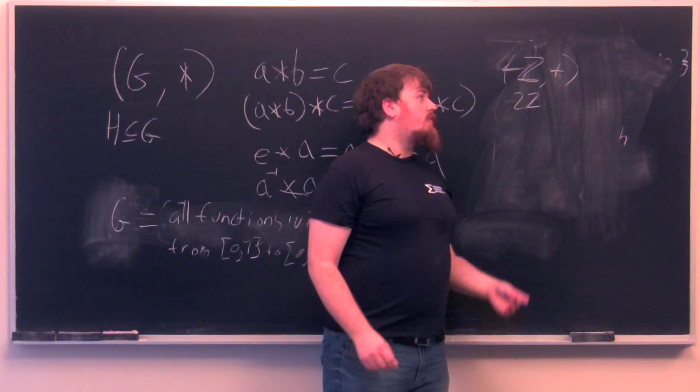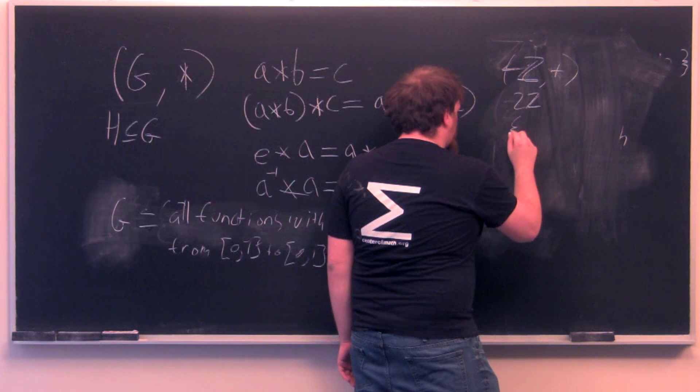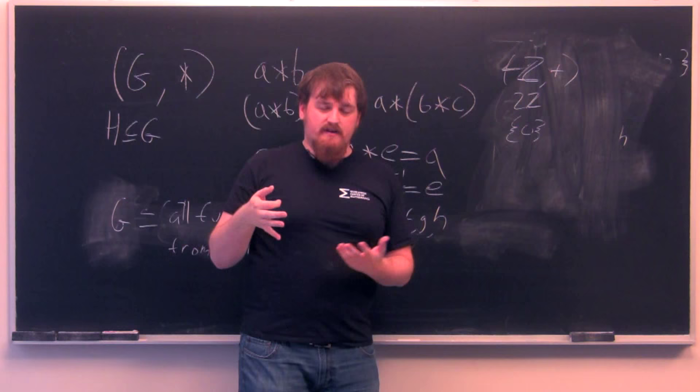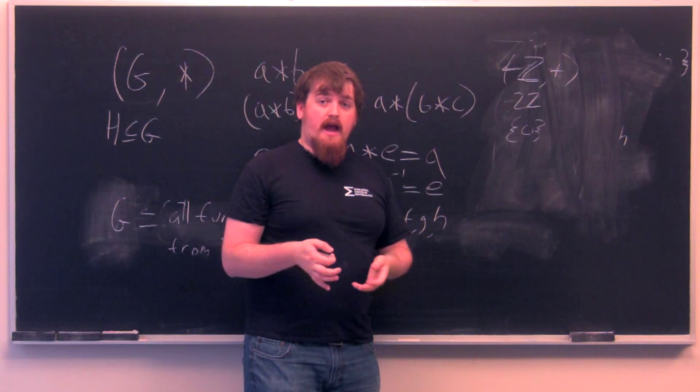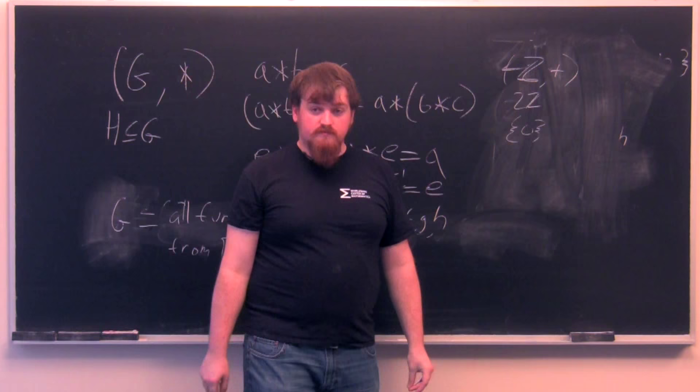So, another interesting subgroup of Z is the subgroup that consists of just 0. 0 plus 0 is 0, and 0 has its inverse as 0, and those are both in the subgroup containing just 0 of Z. As you might guess, this looks a lot like the trivial group that I talked about a bit earlier, and that sort of similarity is something that'll come up in future videos.